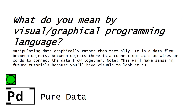What do we mean by visual or graphical programming language? It means manipulating data graphically rather than textually. It is a data flow between objects — between those objects there is a connection that acts as wires or cords to connect the data flow together. Note: this will make more sense in future tutorials because you'll have visuals to look at.